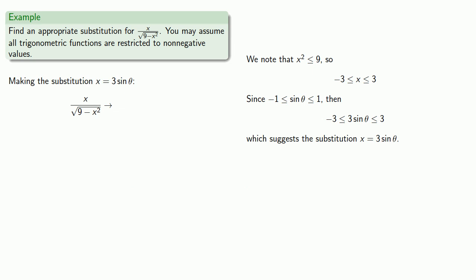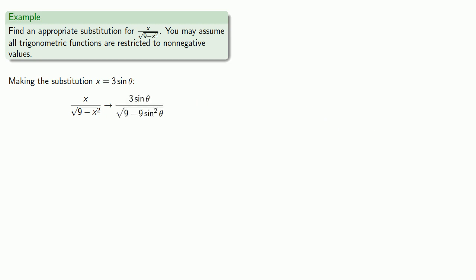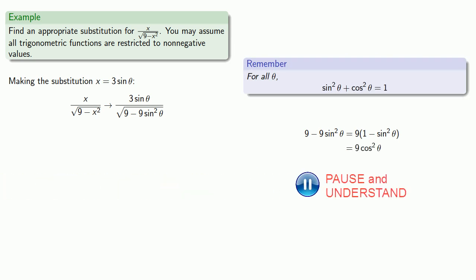So we'll replace x with 3 sine theta. Now the radicand, 9 minus 9 sine squared theta, we'll factor a 9 out of it. And remember our Pythagorean identity, 1 minus sine squared theta is cosine squared theta. We're assuming our trigonometric functions are restricted to non-negative values. So when we take the square root, we can just write this as 3 cosine theta. And we'll go one step farther. The 3 can be removed as a common factor. And sine theta divided by cosine theta, well that's just tangent theta.